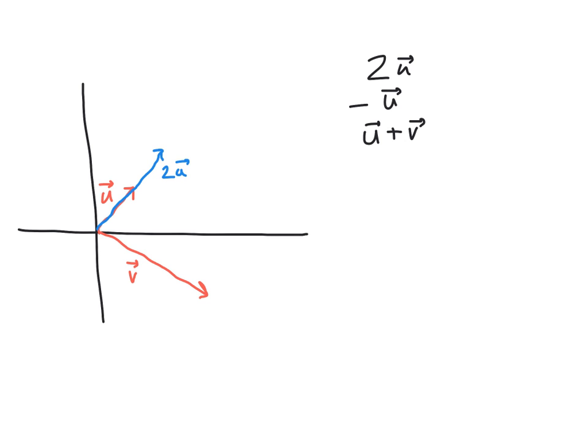The second vector is negative u. The negative coefficient means we go in the opposite direction, and since it's just negative 1 times u, the length of u is unchanged. So negative u is literally just turning the vector around in the opposite direction and going the same length — shown here in green. If it were negative 2u, the arrow would be in the opposite direction but twice as long.